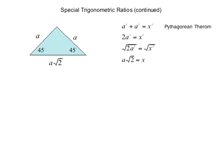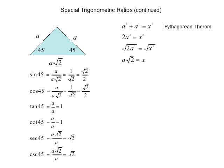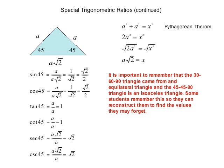Now we're going to find all six trigonometric ratios for 45°. The sine is opposite over hypotenuse, so sine of 45° = a over a√2 = 1/√2. Rationalizing the denominator by multiplying numerator and denominator by √2, we get √2/2. We'll repeat this process for the remaining five trig ratios. It is important to remember that the 30-60-90 triangle came from an equilateral triangle, and the 45-45-90 triangle is an isosceles right triangle, so you can reconstruct them if you forget values.